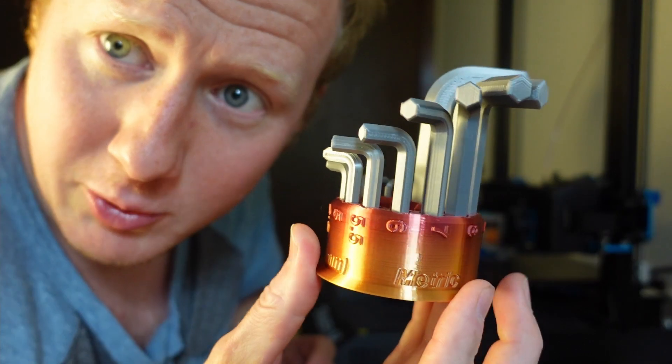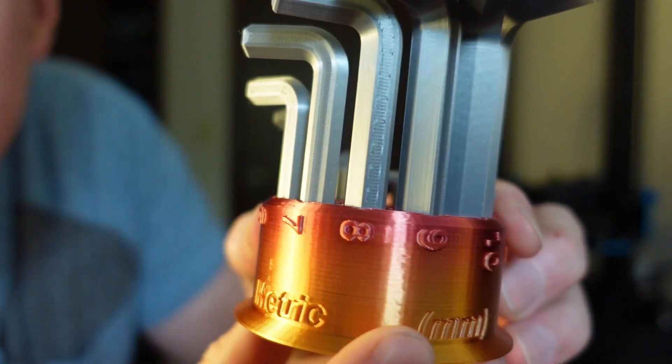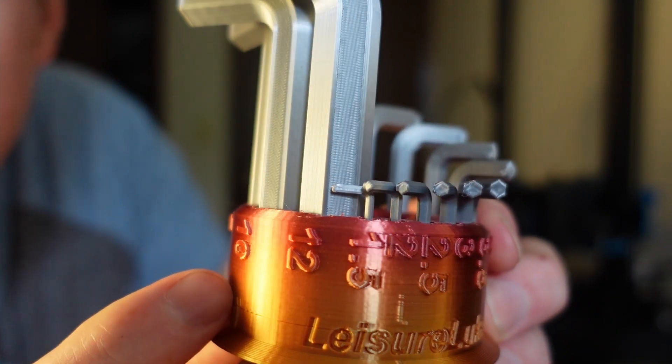Hello, Leisure Luke here. I want to take a few minutes to talk about my latest upload to Thingiverse. This is a set of Allen keys ranging from 12 millimeters to 1.5 millimeters.